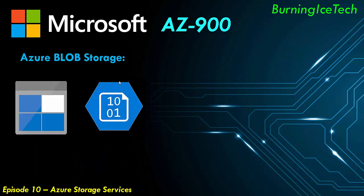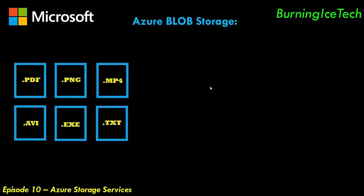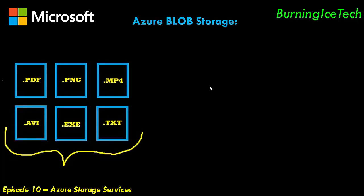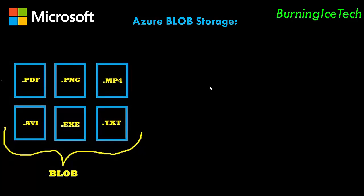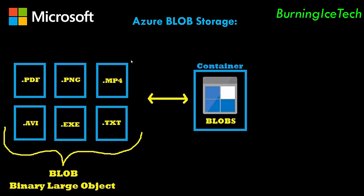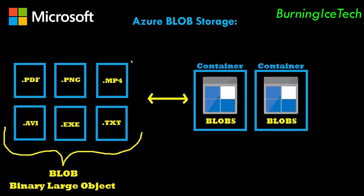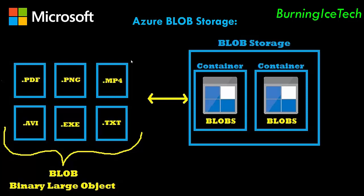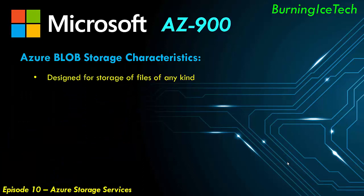Any kind of unstructured data can be called a blob. The word blob is actually an abbreviation which stands for Binary Large Object. So it is basically any kind of file, and you can put those blobs into Azure Blob Storage inside something called a container. The container is simply a holder for multiple blobs, and you can have more than one container within an Azure Blob Storage. It is designed to allow both applications and users to work with unstructured files in the cloud.